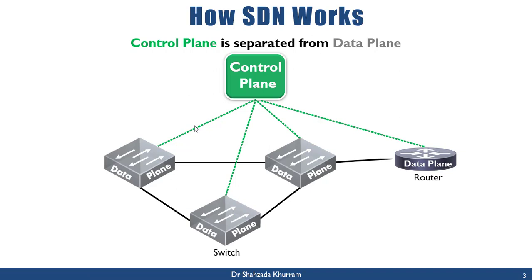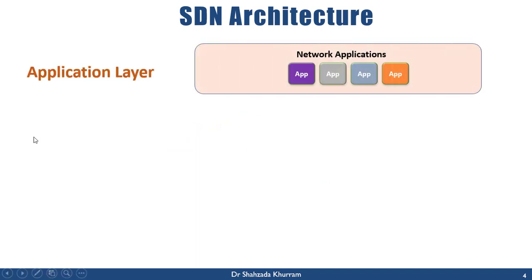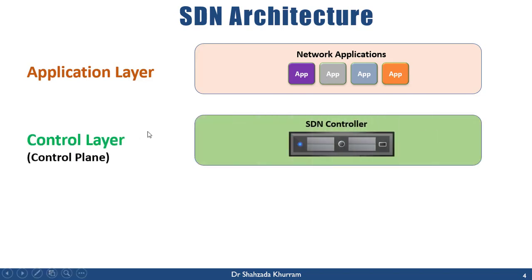SDN architecture is based on three layers. The first layer is the application layer, which consists of network applications used to manage and configure network devices. Applications pass instructions on how the network will work. The second layer is the control layer - also called the control plane - which consists of the SDN controller. This is the brain of the architecture.